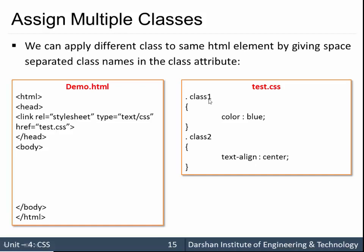So what I want is class1 property as well as class2 property to apply on a single HTML element. So how can I do this? I can use space separated class name values inside the class attribute.